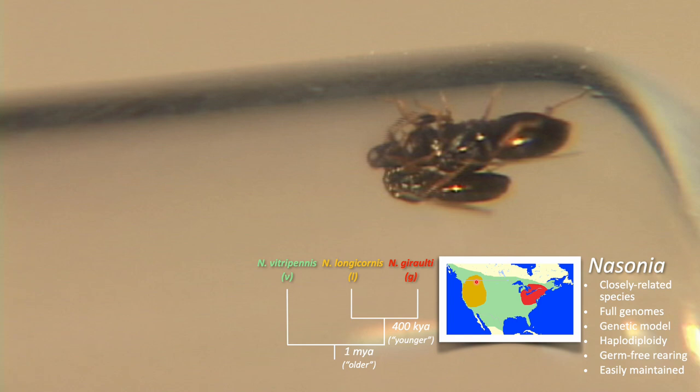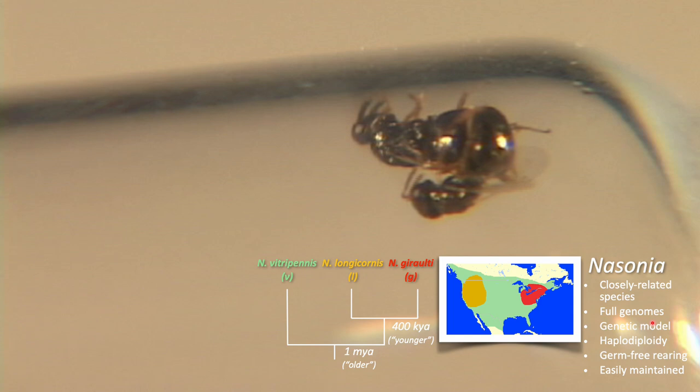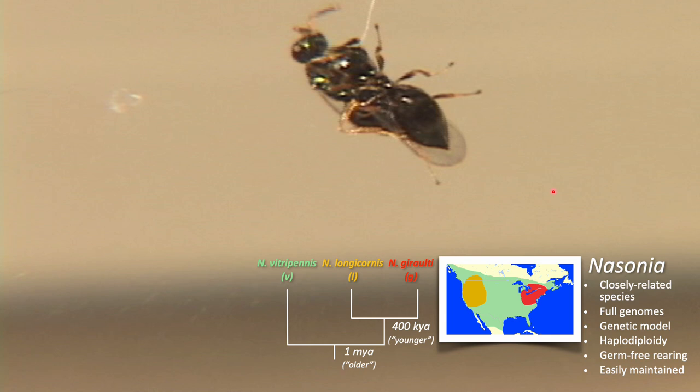These wasps coexist in North America allopatrically and sympatrically, so there's some overlap in their geographic distributions with potential for interbreeding. There are many resources in the Nasonia system, including germ-free rearing, which is going to be useful for looking at a wasp with and without its microbiome and how reproductive isolation changes in those contexts. This tiny wasp is about two millimeters in size — kind of like a grain of rice, a little bit smaller than Drosophila. Inside Nasonia's reproductive tissues and gametes are bacteria.